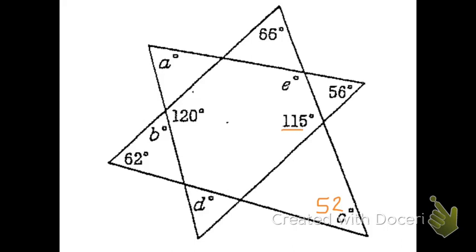Looking at the angle measure 115, we know the angle next to it is going to be 65 because it's a linear pair. In these types of problems, if you know a missing angle even if it doesn't have a letter, find it anyway because it might help you find another angle. We see vertical angles here, so this angle will also be 65 degrees. Then in the small triangle, 180 minus 56 minus 65 gives us 59 degrees. That leads us to angle E, which is 121 degrees because it forms a linear pair with 59.